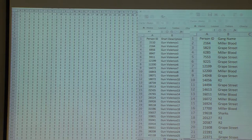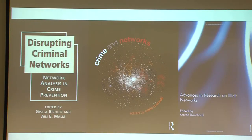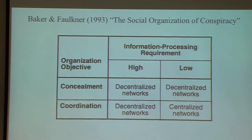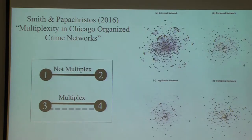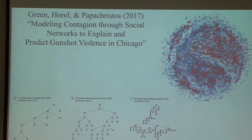Data for criminal network research comes almost entirely from police records, legal cases, and investigations — data sources not intentionally designed for social network analysis. Criminal networks based on official crime data might more accurately reflect the activities and opinions of criminal justice agencies than the actual criminal groups themselves. Despite this data limitation, incredible findings emerge. For example, we've learned how criminal networks organize to maximize concealment at the expense of efficiency, that network multiplexity was a structurally relevant property of prohibition-era organized crime, and that social contagion accounts for 63% of gun violence in Chicago.